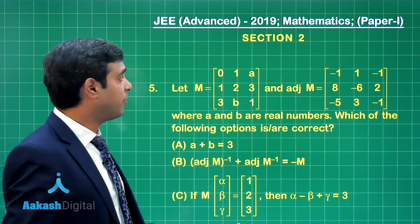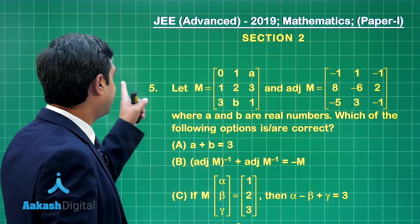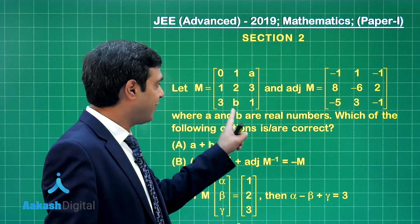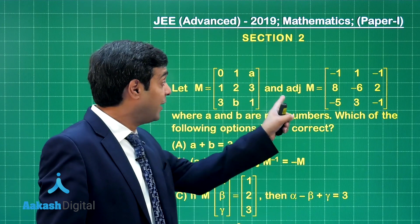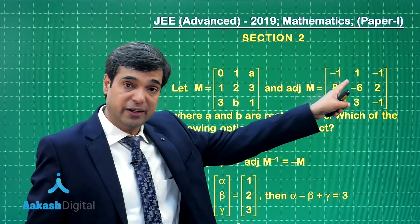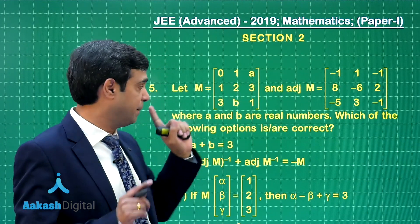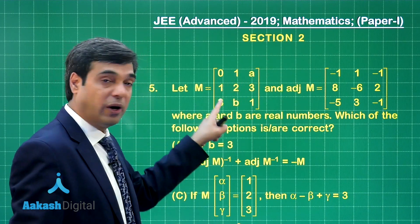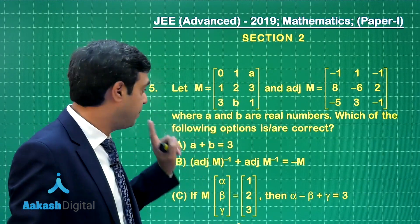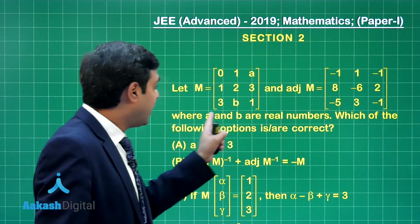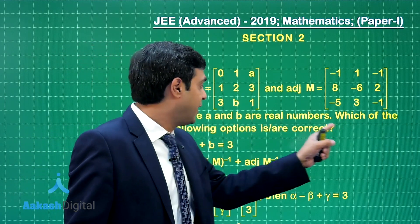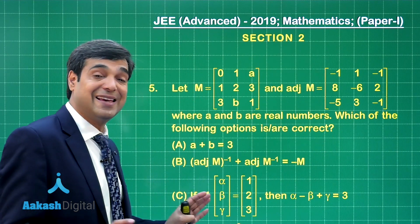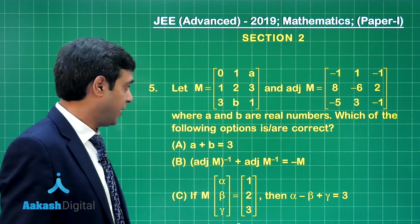Taking up question number 5 of this section. Let M be a matrix given and its adjoint is also given, but M involves two unknowns A and B, where A and B are real numbers. Which of the following options is/are correct?